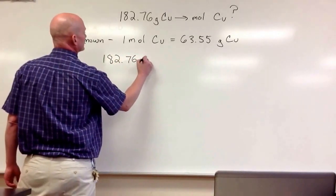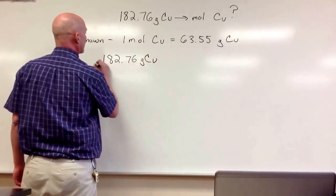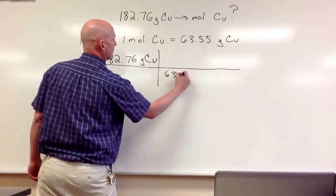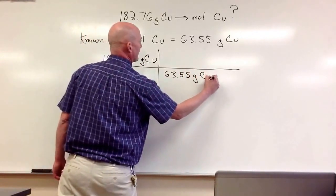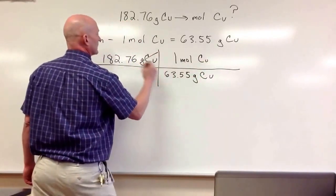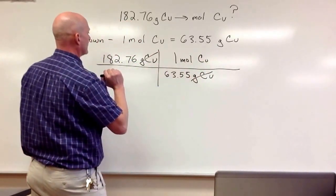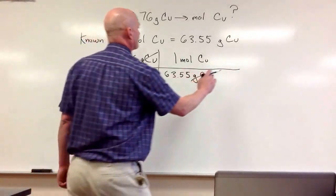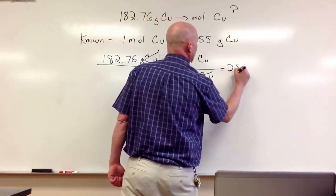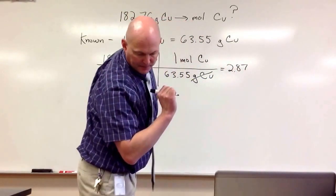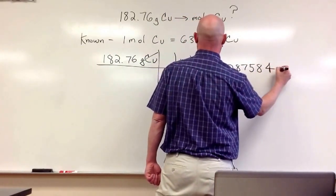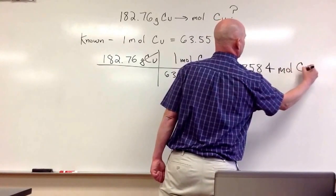182.76 grams of copper. We'll do some dimensional analysis. 63.55 grams of copper in one mole of copper. Get rid of the units you don't want. Okay, go ahead and do your math. The answer comes out to 2.87584 moles of copper.